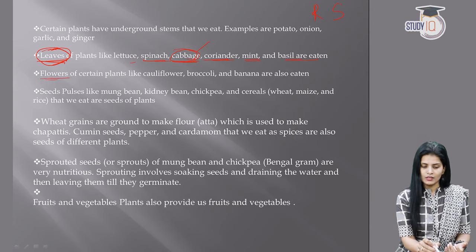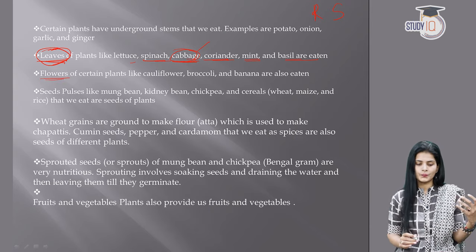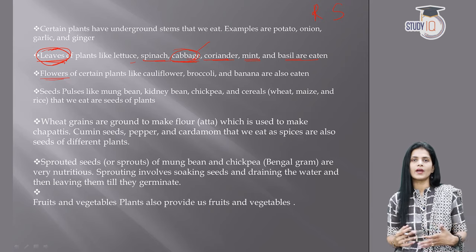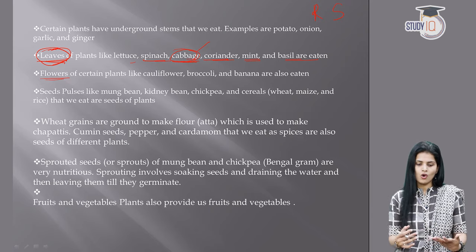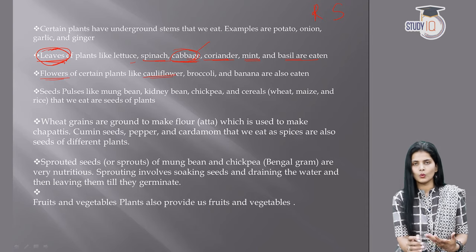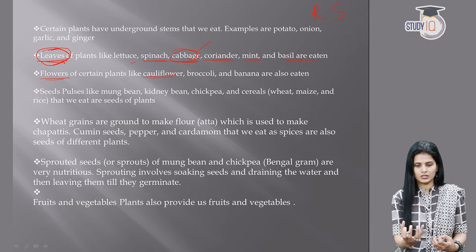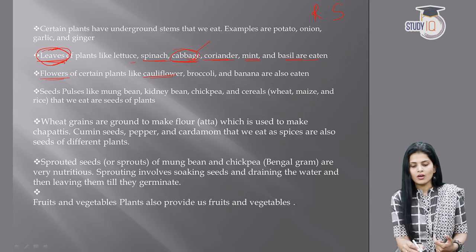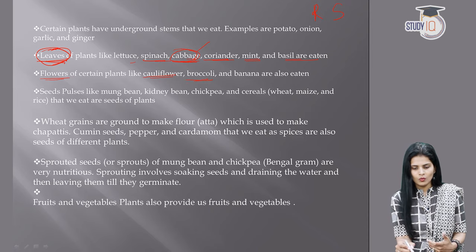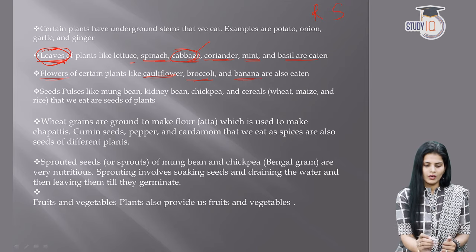Then there are flowers: some plants' flowers are also edible. Common examples are cauliflower (phool gobhi) and broccoli — both look like flowers and are indeed flowers. Banana flowers are also edible. After leaves, we have flowers as another edible plant part.